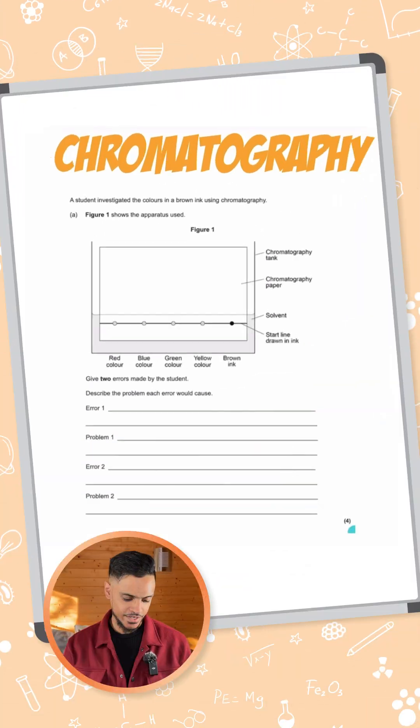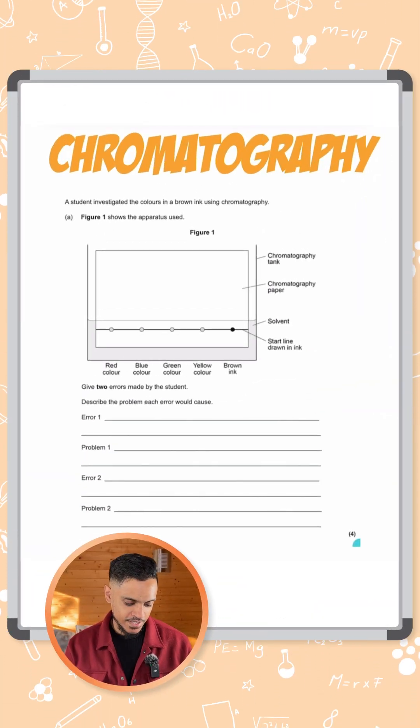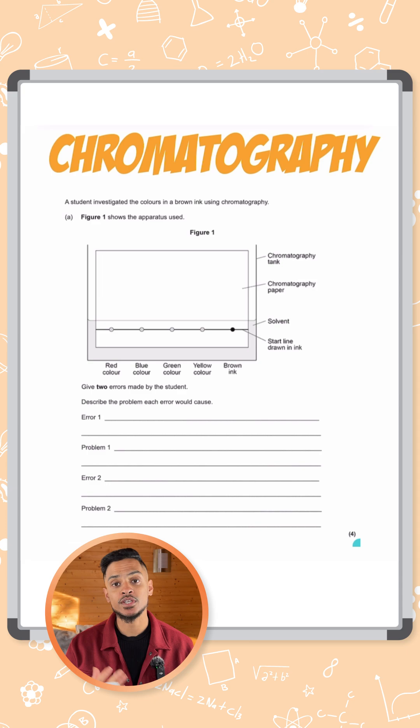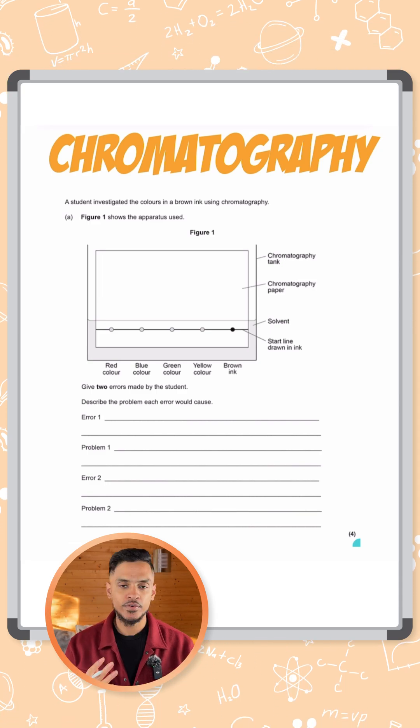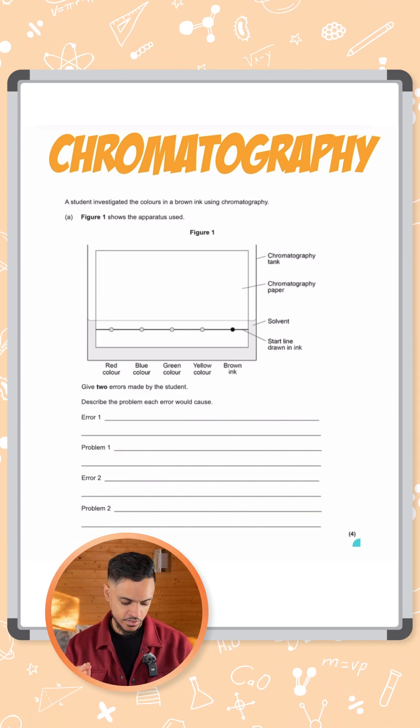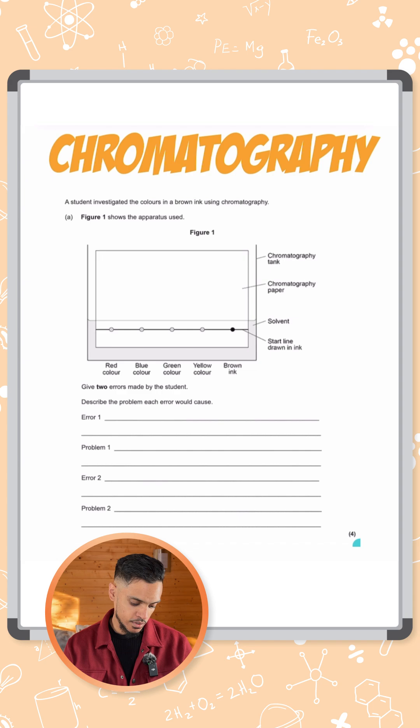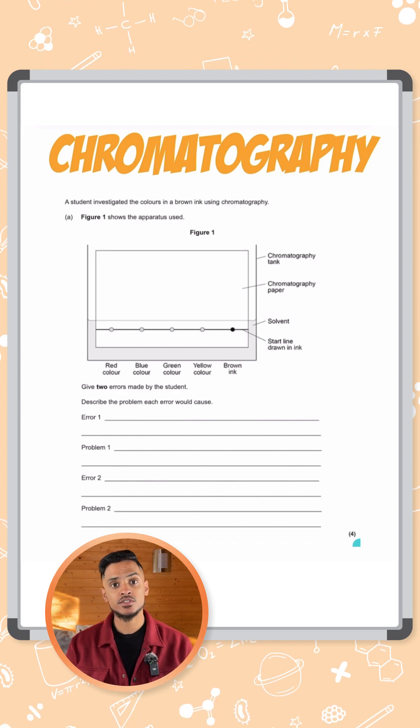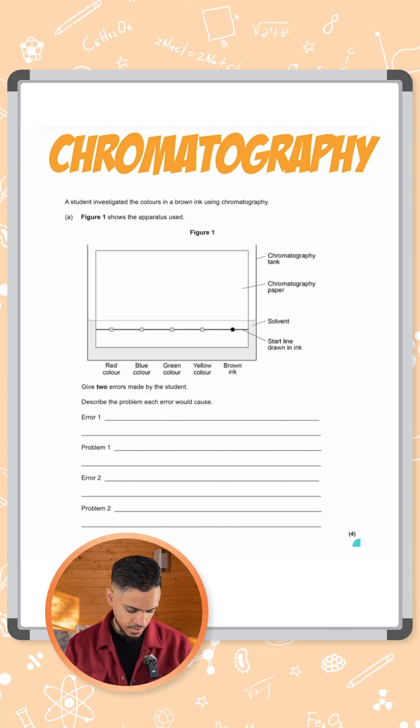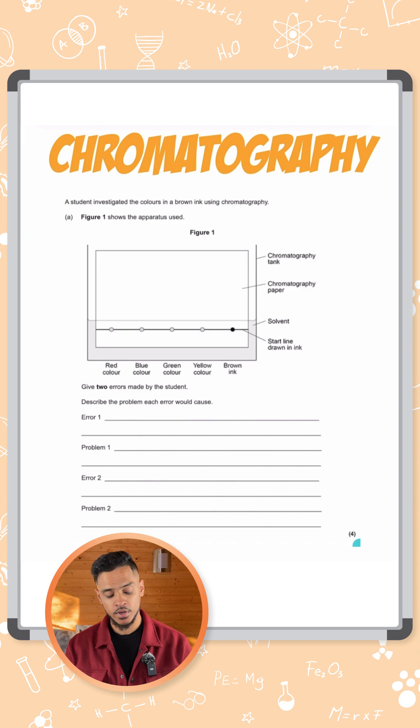Right, we have a chromatography question here. It says that a student investigated the colours in brown ink using chromatography and we've got a diagram of that setup that student has used. Now there's two errors made by the student and we're asked to identify them and to describe why it's a problem as well.